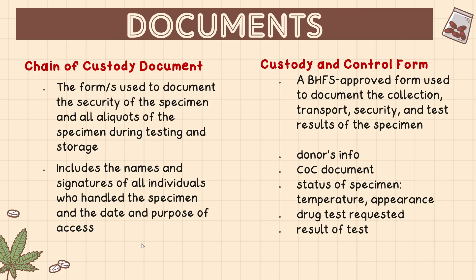The custody and control form contains the patient's information and includes the chain of custody document. This is a BHFS-approved form — Bureau of Health Facilities and Services — used to document the collection, transport, security, and test result of the specimen. It includes donor's information, the status of the specimen such as temperature and appearance, the drug test requested, and the test result.